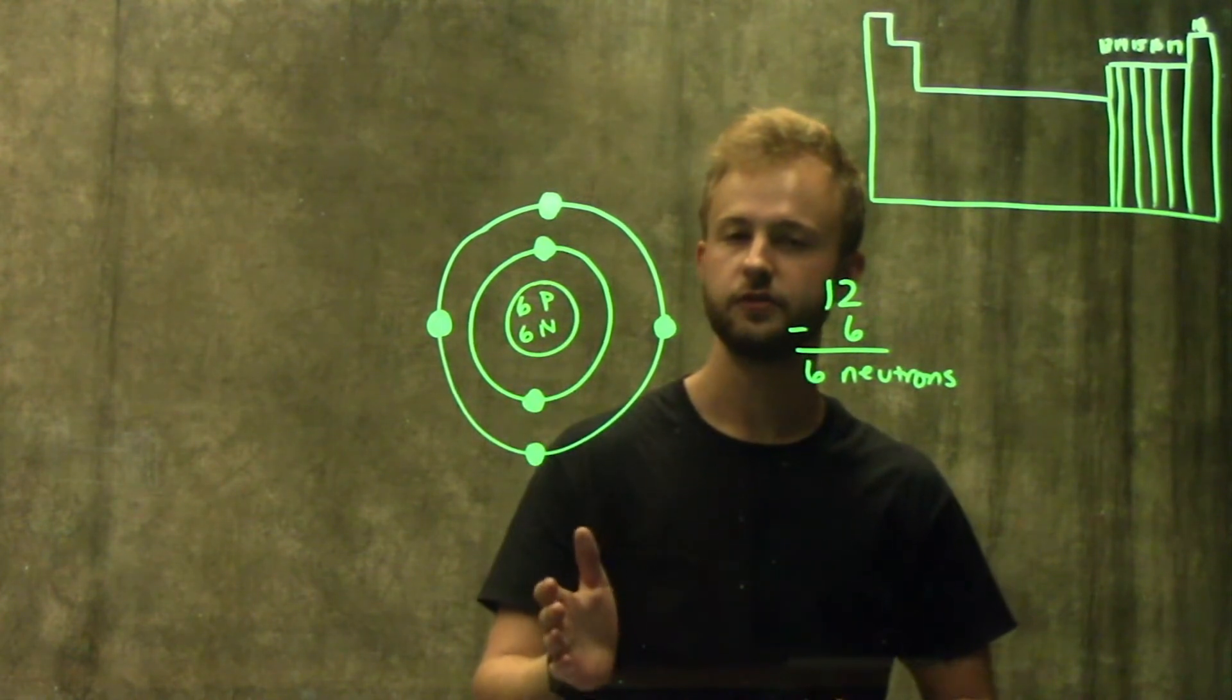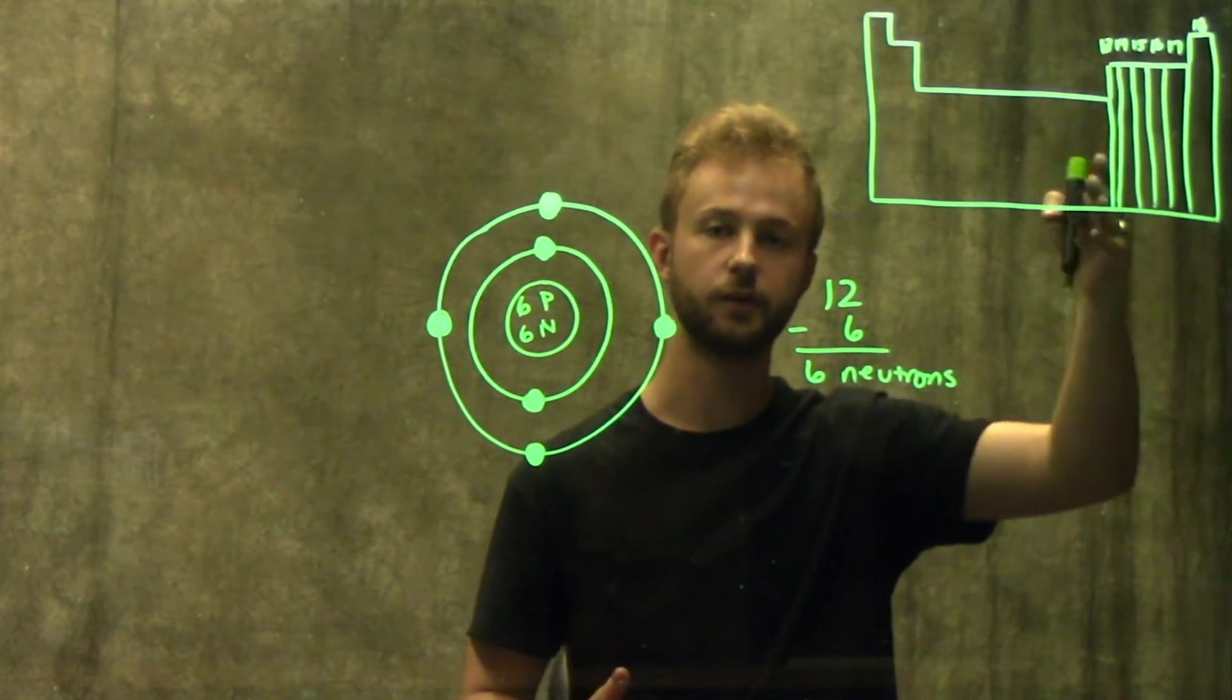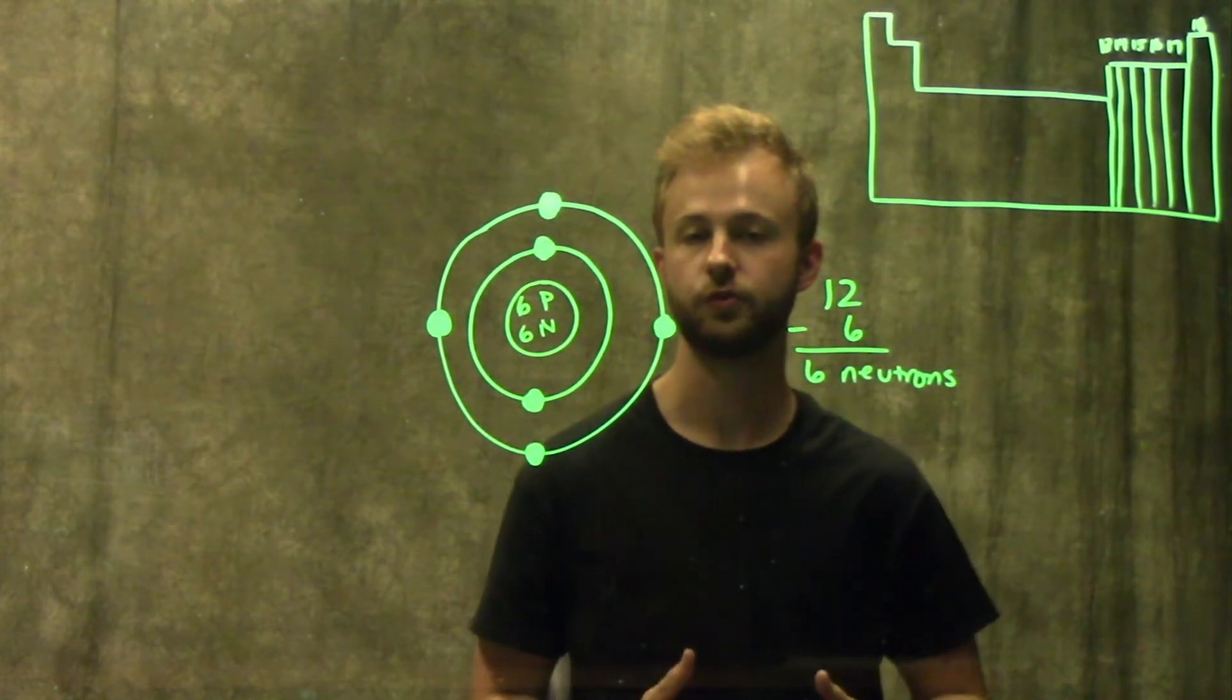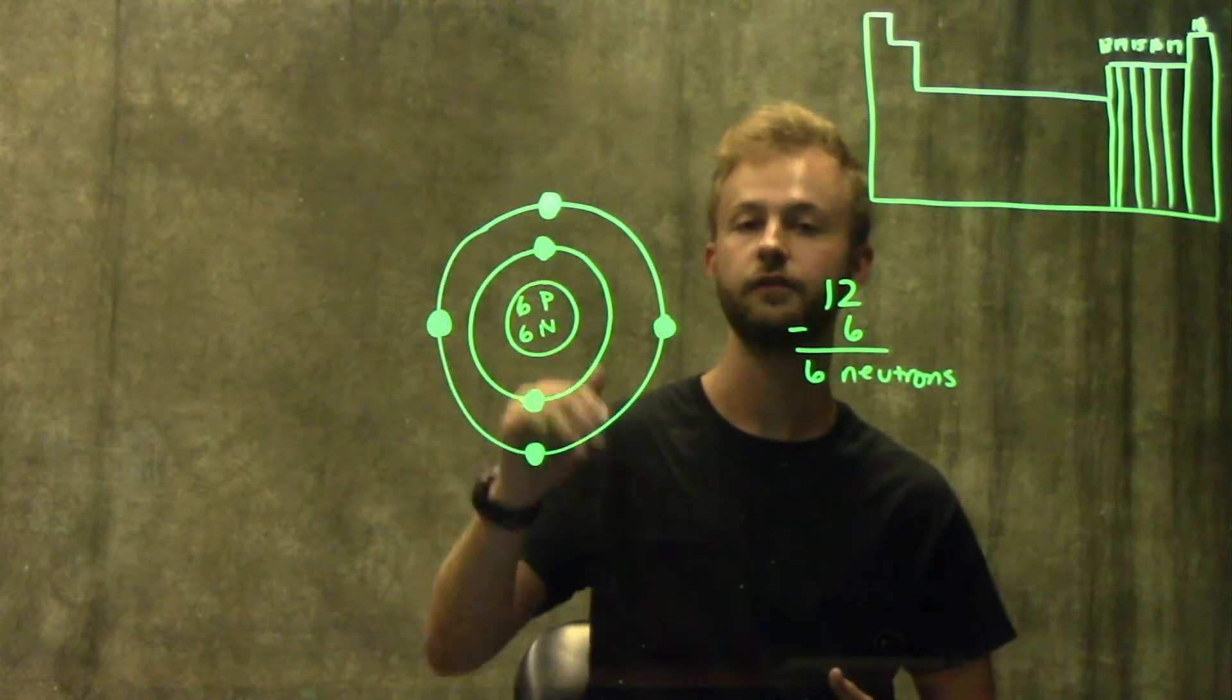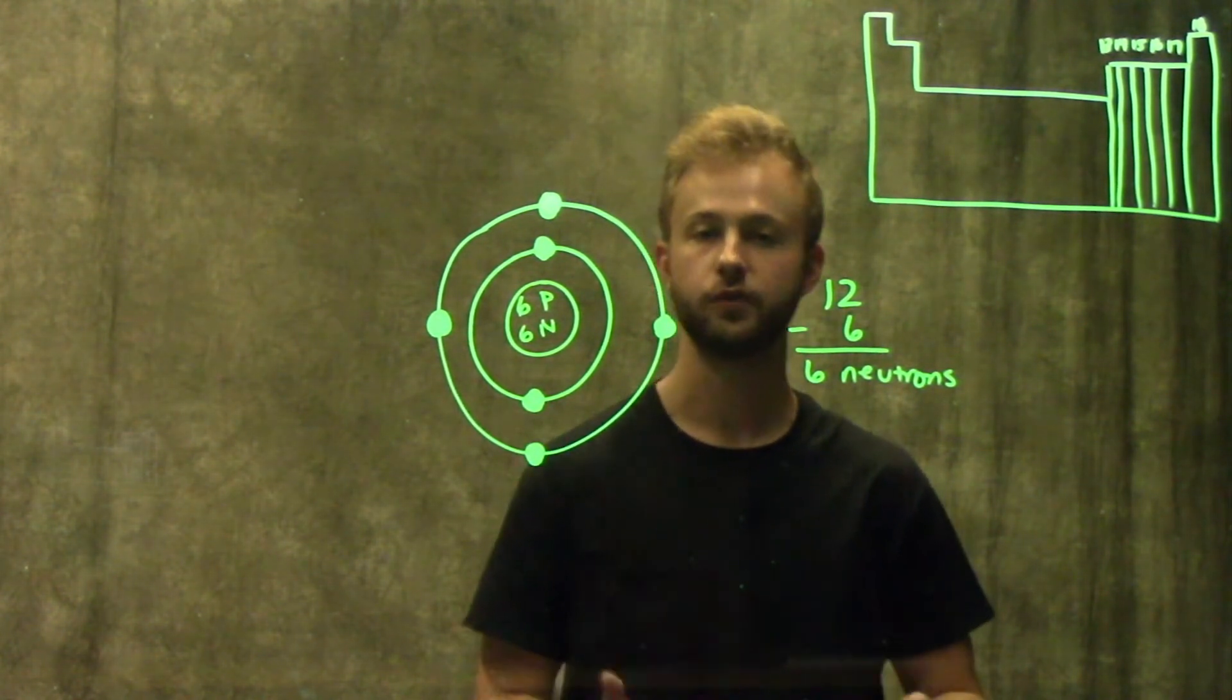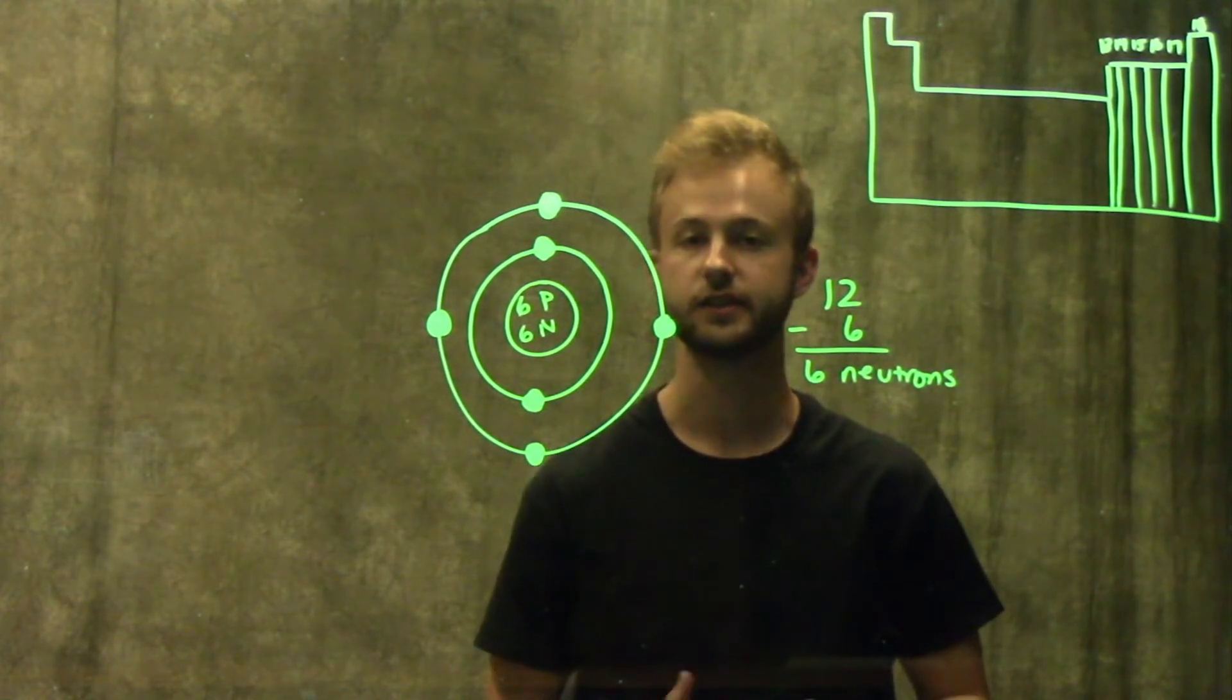Another important thing to remember about valence electrons is that all of the elements in one column or family have similar chemical reactivities because they all have the same number of valence electrons. That just serves to demonstrate once again how important these electrons are in determining the chemical characteristics of an element.